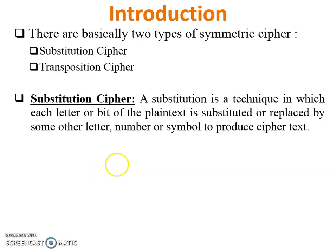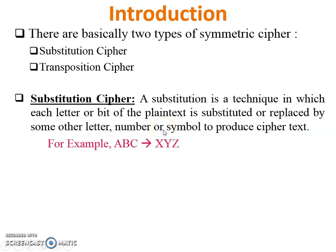Substitution Cipher means letters of plain text will be replaced by some other letter, number, or symbol to produce cipher text. For example, ABC is the plain text and XYZ will be the cipher text. So this is the example of Substitution Cipher.